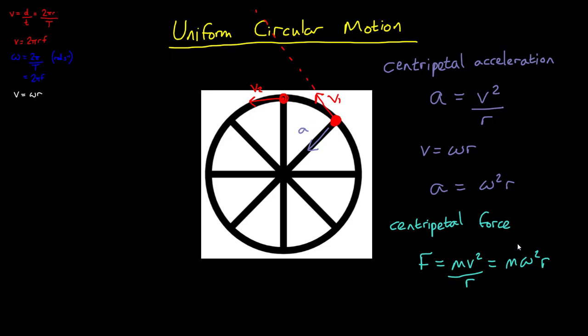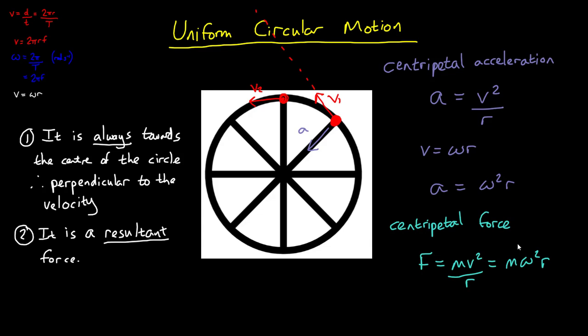The two most important things to remember about centripetal force in uniform circular motion are: Number one, it is always, always, always towards the centre of the circle. Therefore, it is always perpendicular to the motion of the object, perpendicular to the velocity. And number two, it is a resultant force. It is not a force in its own right, like friction or gravitational force. It is simply the resultant of other forces. We're going to consider this in a moment through some examples.